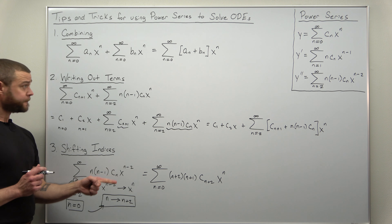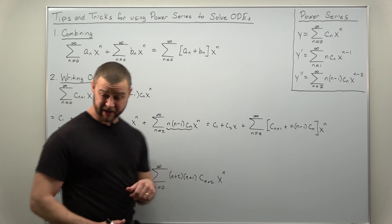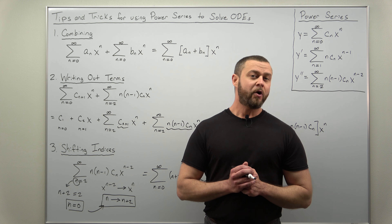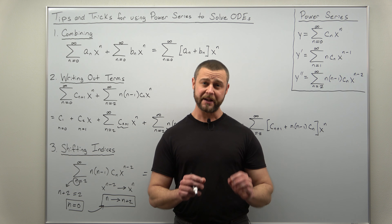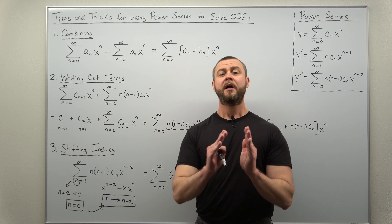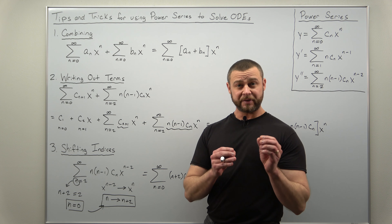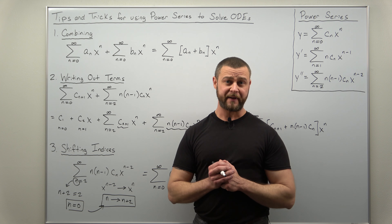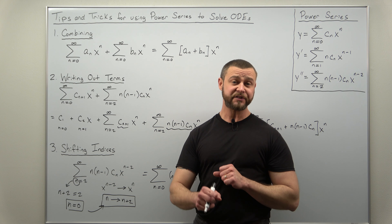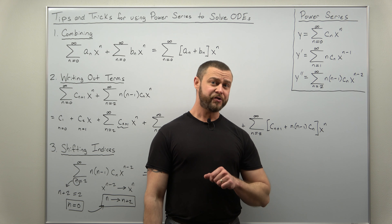Looking at all the work here — combining multiple power series, writing out terms, and shifting indices — none of this is really complicated; it's all pretty minimal, actually quite simple, just adding and subtracting. But don't be deceived: these problems can be very tedious, especially if you go too fast. It's very easy to lose track and miswrite an index, miswrite a subscript. My one recommendation is not only to take your time but to take double extra time so that way you don't misrepresent any indices, coefficients, or powers of X. It really pays off.